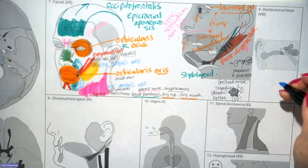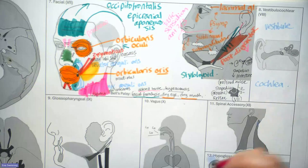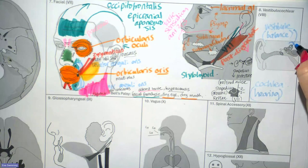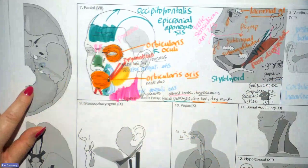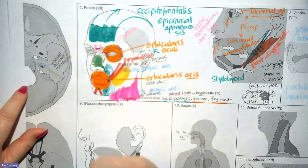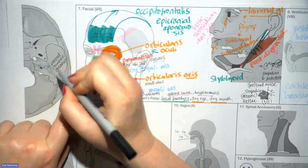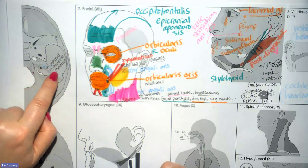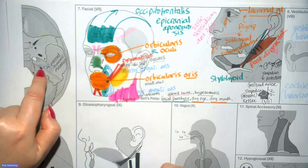The vestibulocochlear nerve, cranial nerve eight, innervates two structures: the vestibule, important for balance, and the cochlea, important for hearing. For cranial nerves seven and eight, the opening in the skull they pass through is the internal acoustic meatus. The cochlea and vestibule sit in the temporal bone, and signals travel back through that opening to the brain. The facial nerve also passes through the internal acoustic meatus, then along the facial canal, and eventually exits at the stylomastoid foramen, between the styloid and mastoid processes.